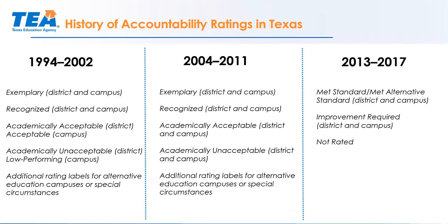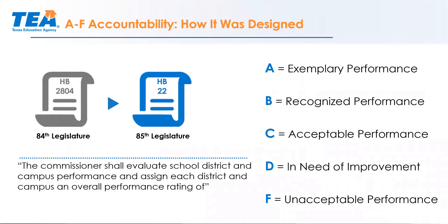Then we redesigned our assessment again. We rolled out the STAAR test, and from 2013 through 2017, ratings were based on one of the following: either you met standard or you met the alternative standard if you're an alternative education accountability campus. If you did not meet standards, then you were improvement required, and we had a rating of not rated for special circumstances.